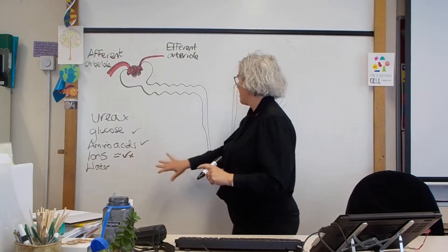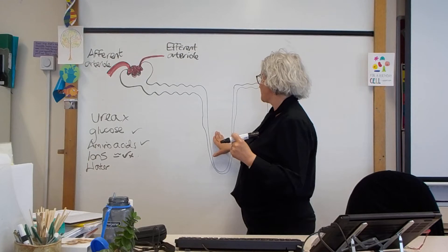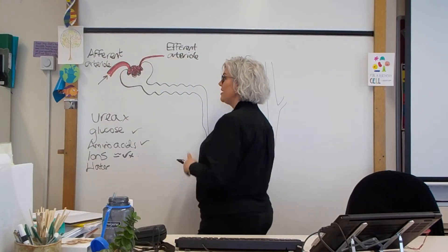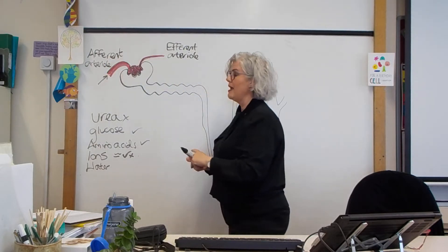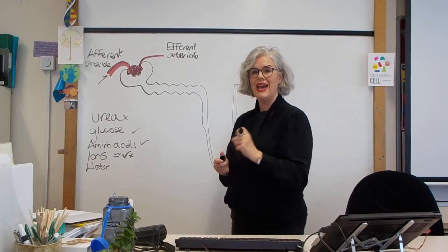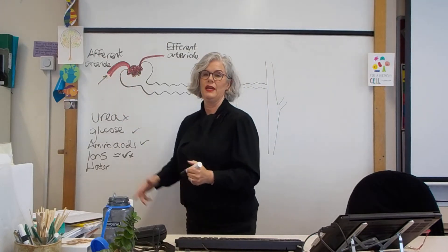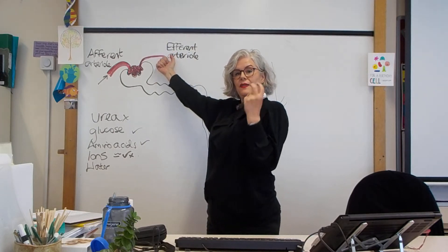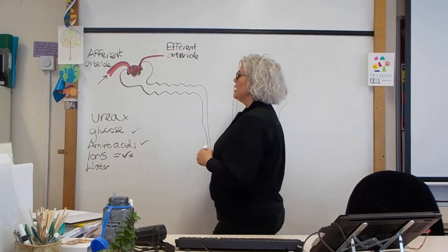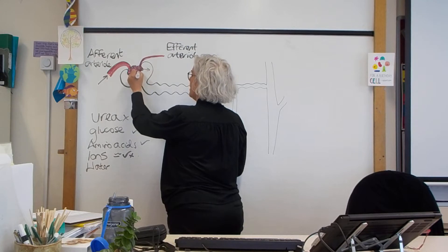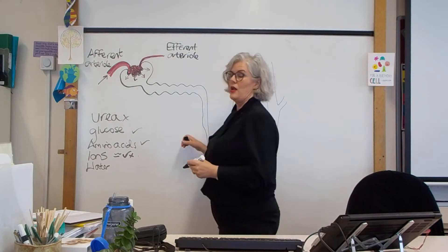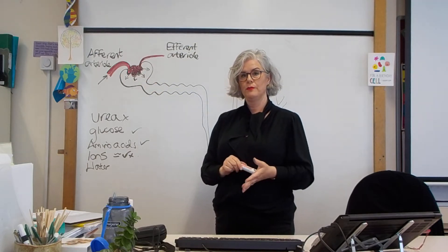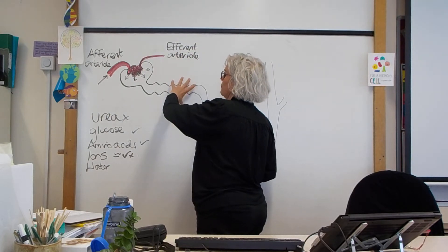The water and ions — we reabsorb a lot of water in the loop of Henle and balance the ions there as well. The blood comes into the afferent arteriole under high pressure from the heart, with a wider lumen than the efferent arteriole. Think about putting your finger over a hose — you narrow the lumen and increase the pressure. That pressure means the urea, glucose, amino acids, ions, and a lot of the water are pushed out of the glomerulus into the Bowman's capsule, and then here we selectively reabsorb some of those things back.